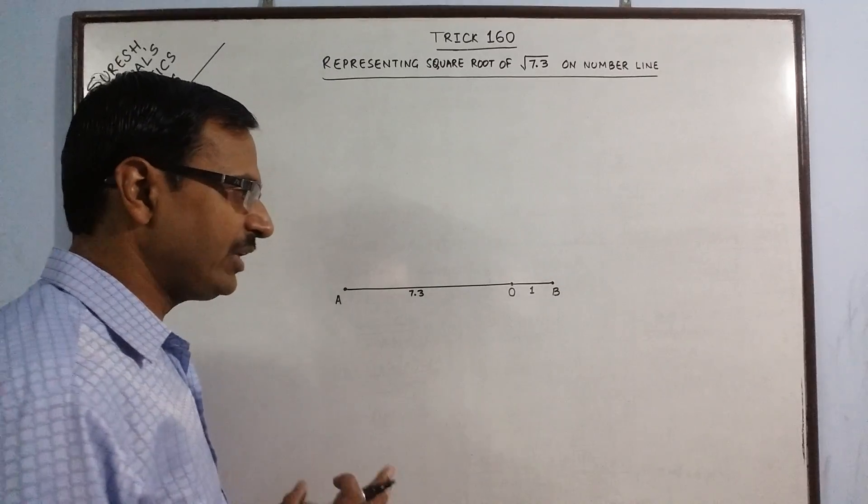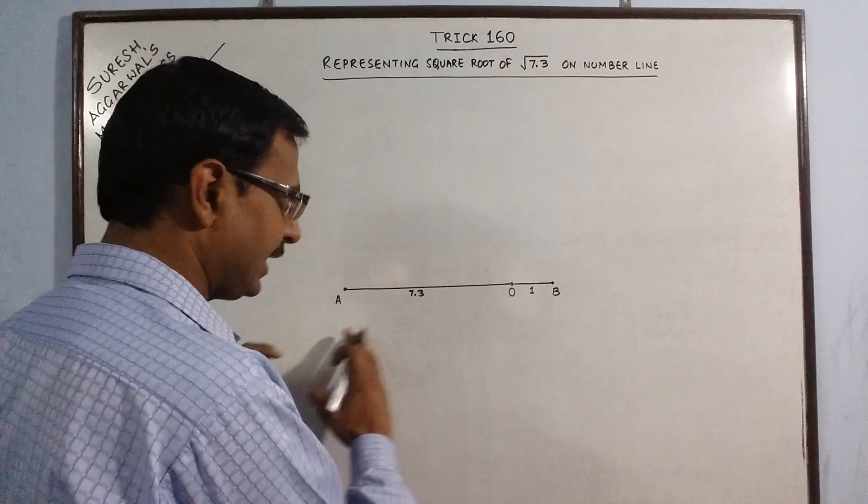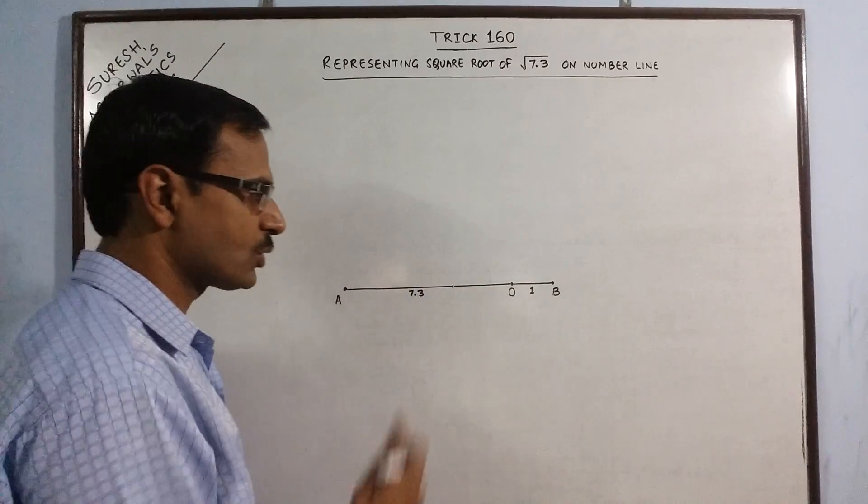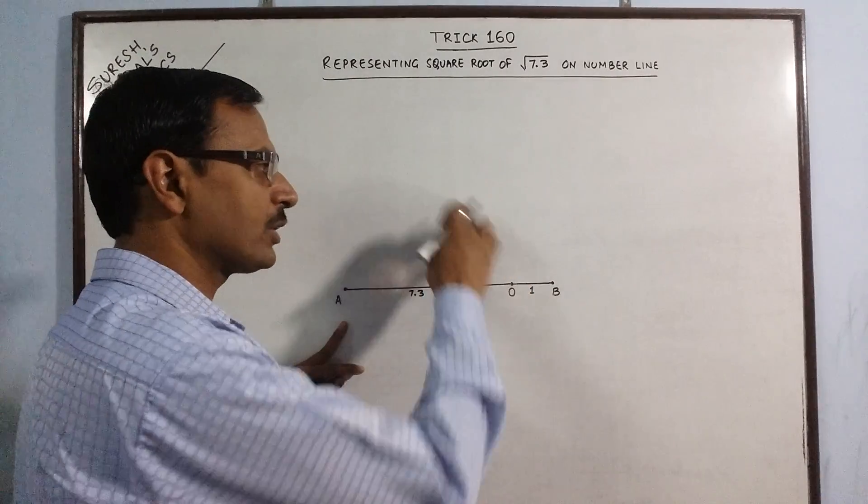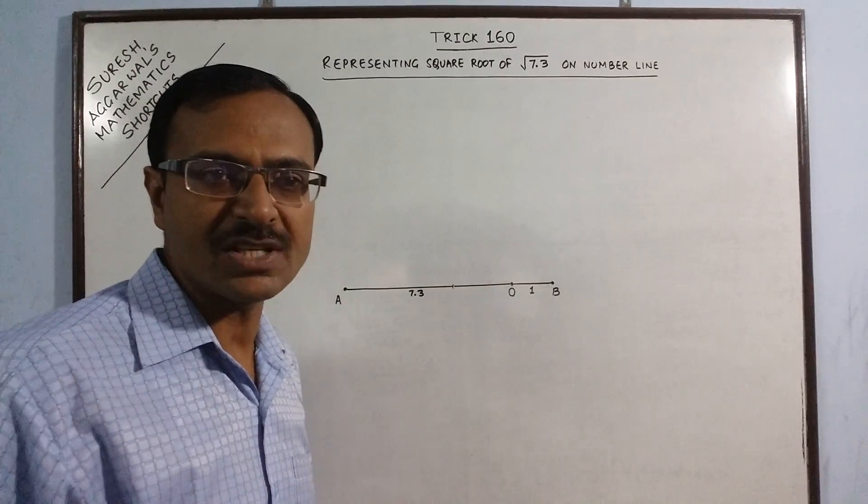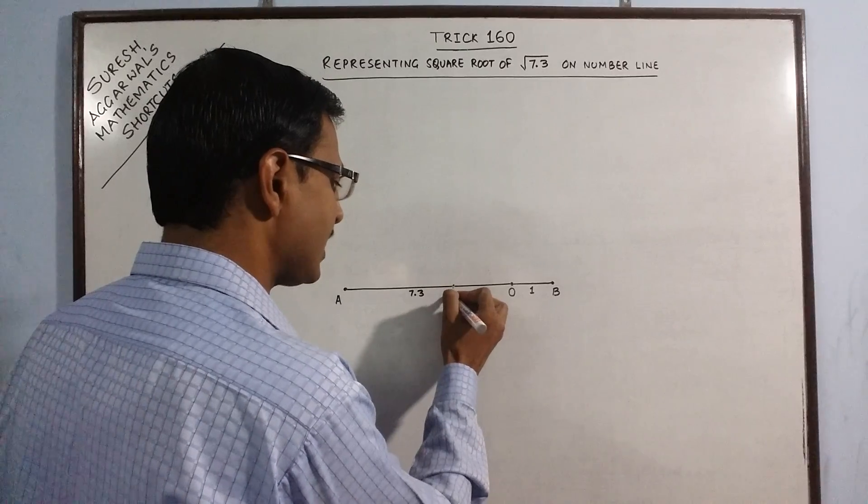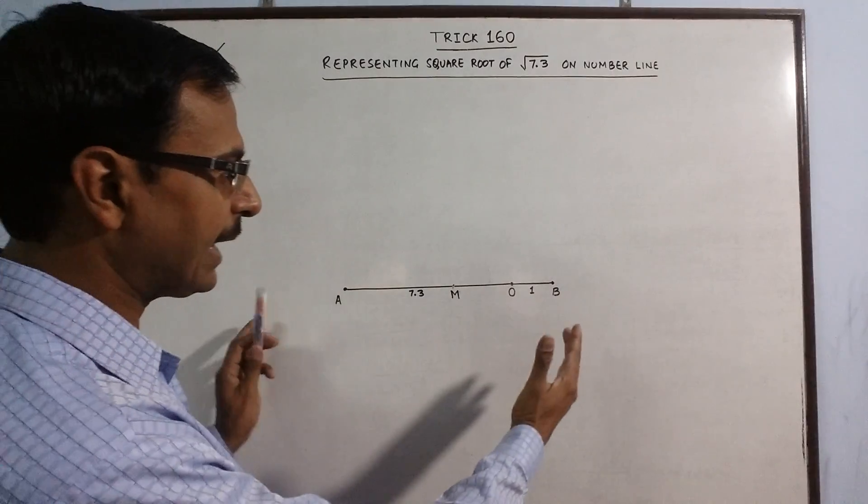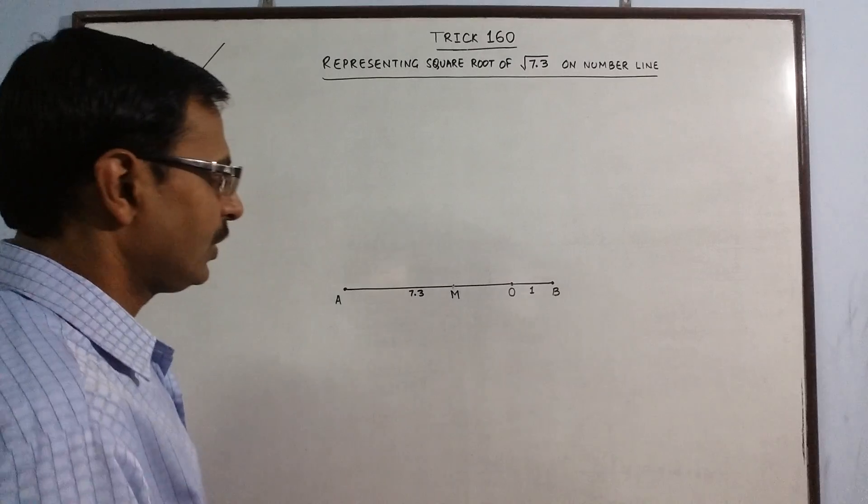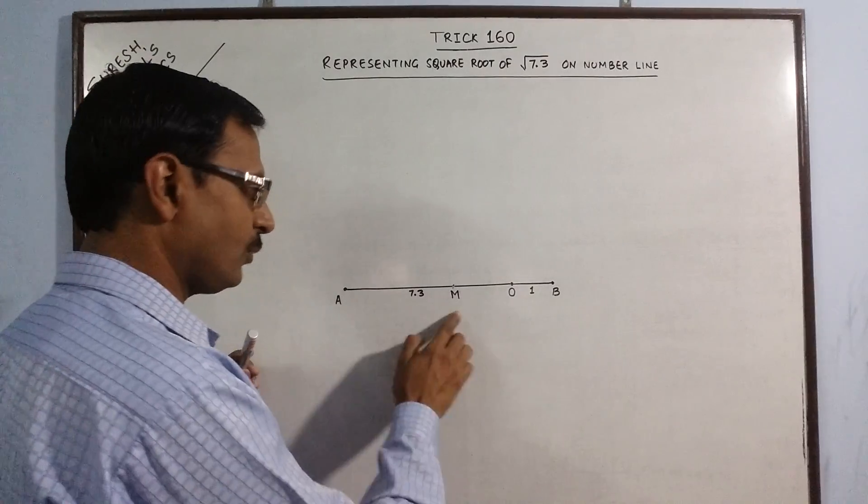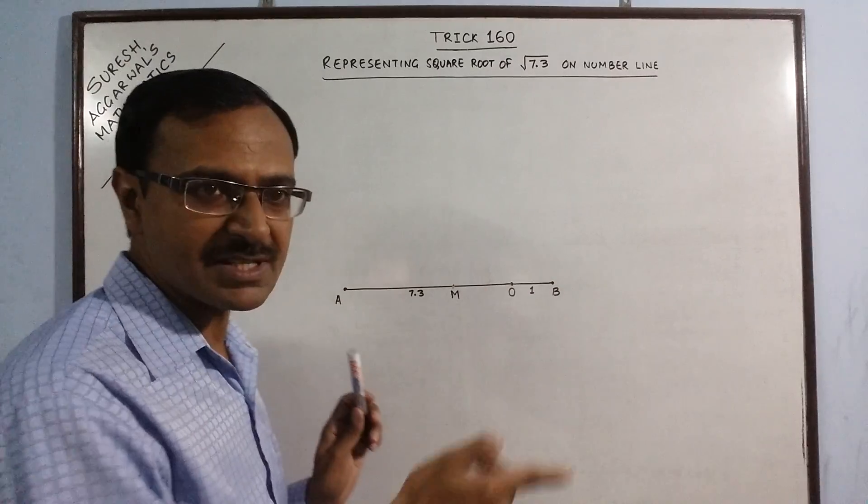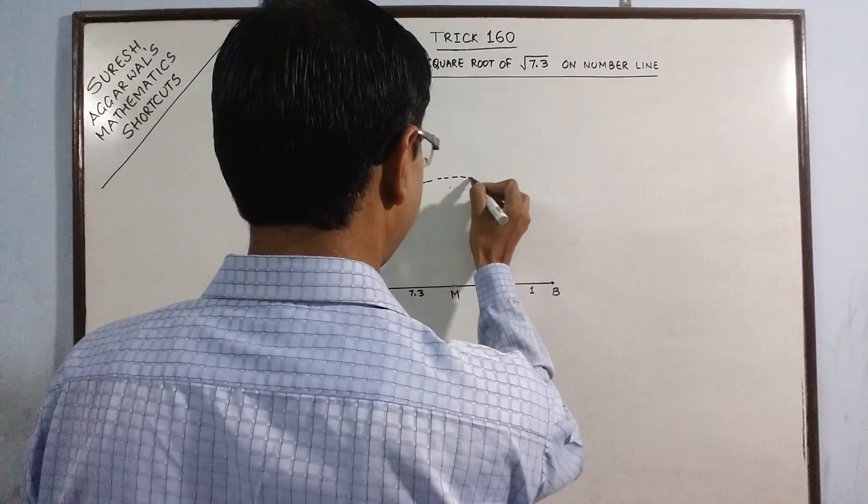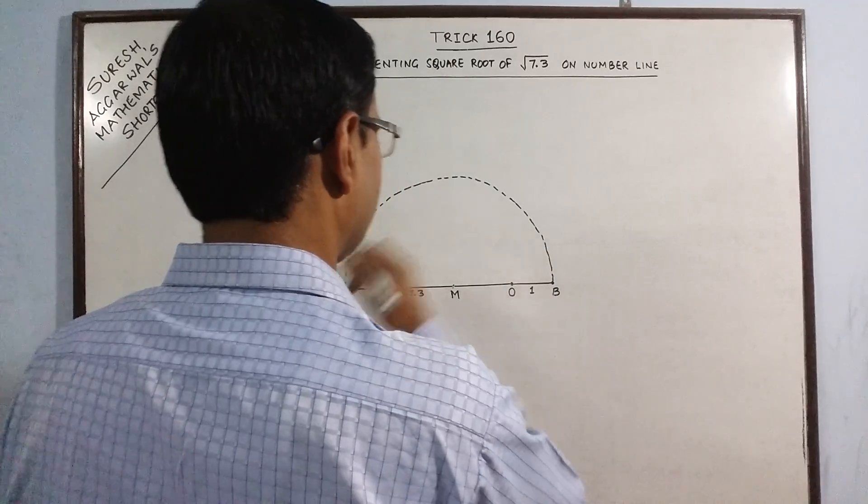Now we need to find out the midpoint of this line AB. That can be very easily drawn by drawing the perpendicular bisector of this line. I am just marking the midpoint of this line, say this midpoint is M. Now M is the midpoint of the entire line AB, that is 8.3 centimeter line. In M as center and MA or MB as radius, both are equal, I will draw a semicircle.